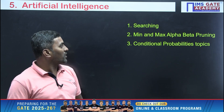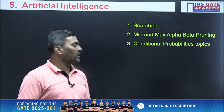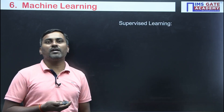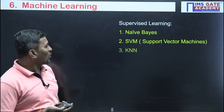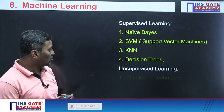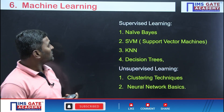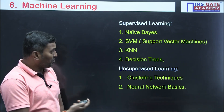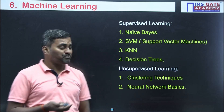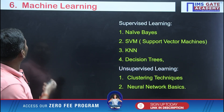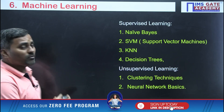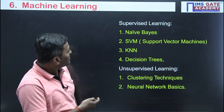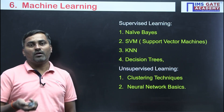For Artificial Intelligence, topics asked last year include searching, minimax with alpha-beta pruning, and conditional probability-based questions. For Machine Learning, there are two major categories of subtopics: Supervised Learning and Unsupervised Learning. These topics were stressed in the previous year's paper, contributing around 11 marks from Machine Learning. Work through these topics and take more mock tests related to them.